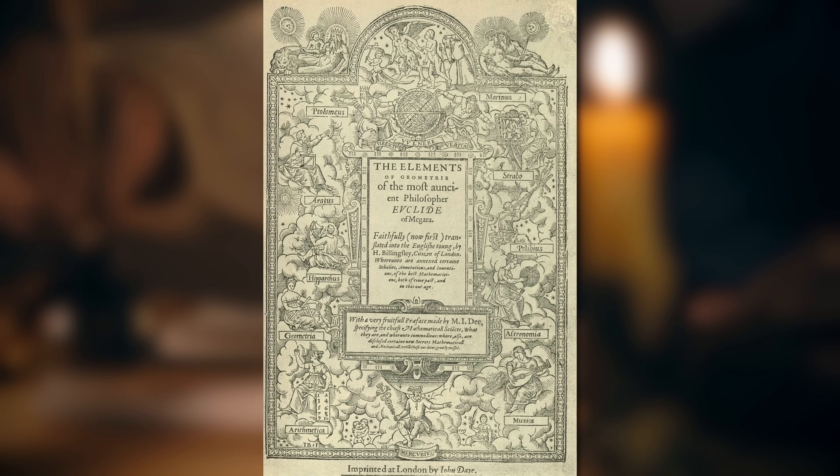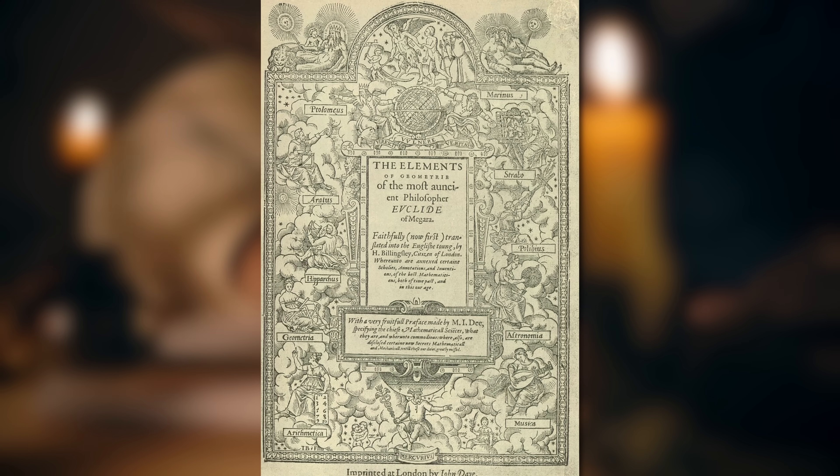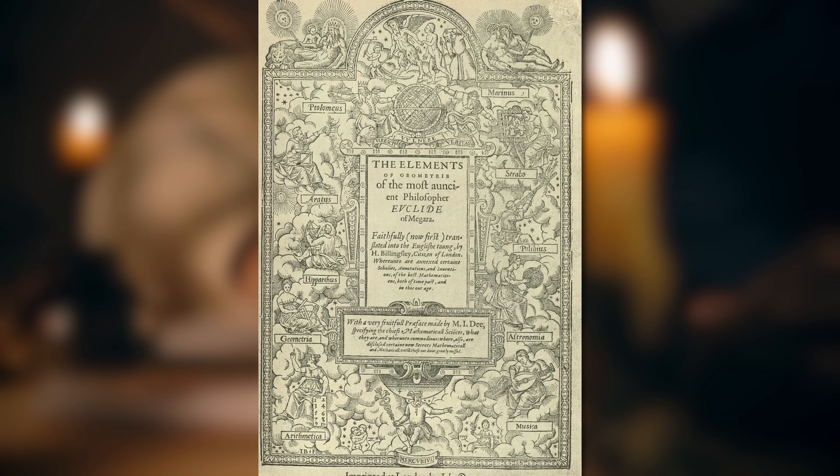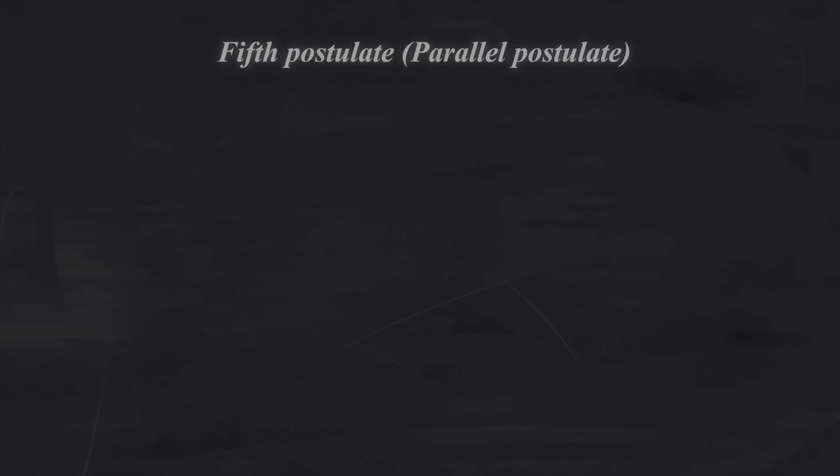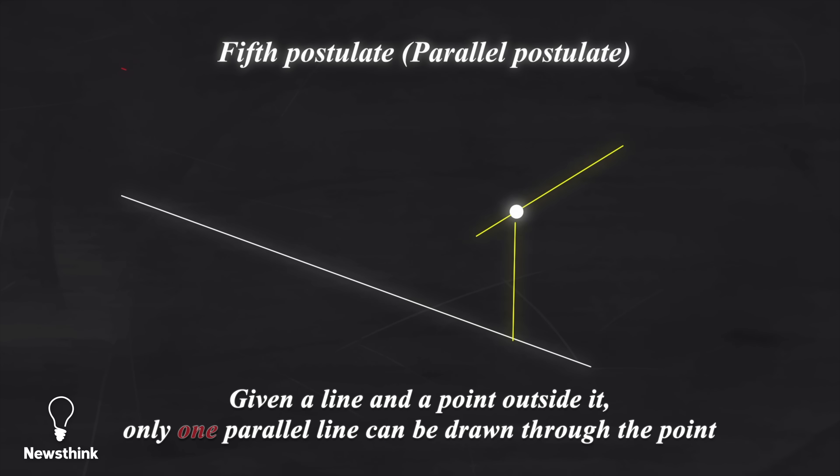Carl also studied Euclid's elements, written around 300 BC, which laid the groundwork for geometry. But he questioned Euclid's fifth postulate, also known as the Parallel Postulate, which states, Given a line and a point outside it, there is exactly one line through the point that is parallel to the original line.